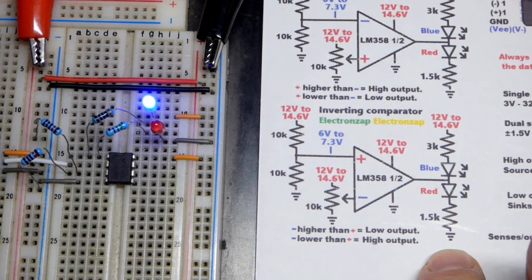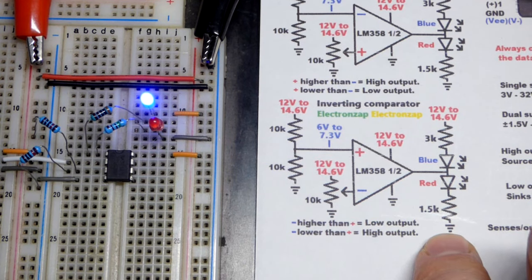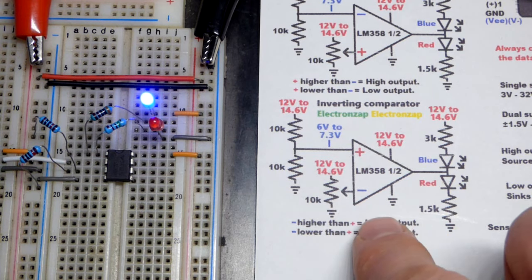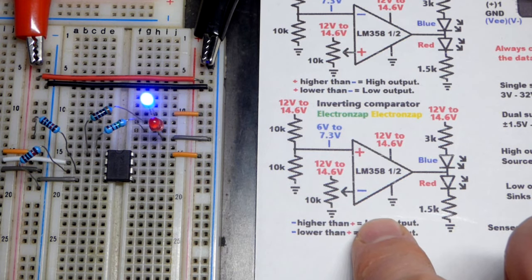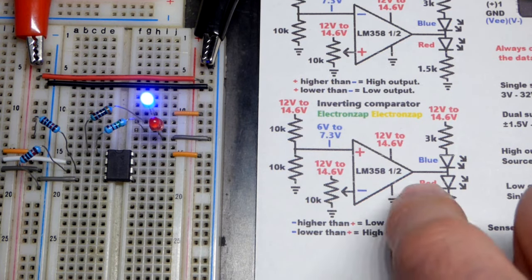I do have lithium ion 18650 cells. But, that's a different chemistry. The voltages are very different. Sometimes they can be similar. But, you don't treat a lithium ion battery like a lithium iron phosphate battery. So, make sure you understand the chemistry of the battery you're using.